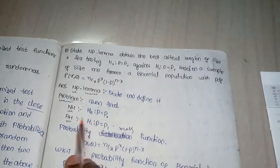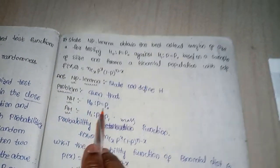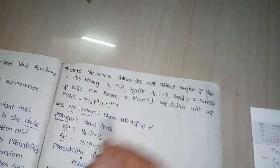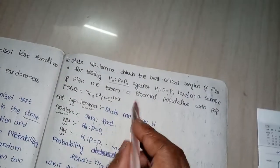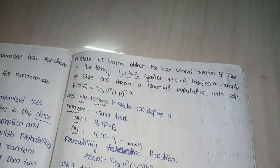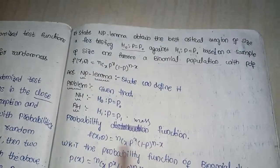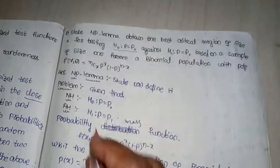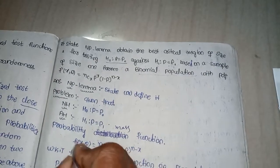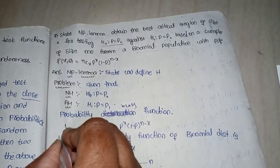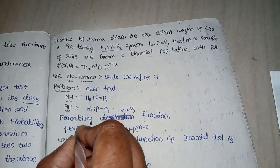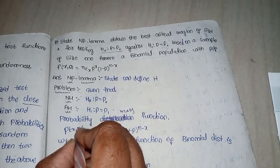Given that null hypothesis H0: P equals P0, and alternative H1: P equals P1. They specified a binomial population, meaning we use the binomial probability mass function. The parameters are N and P.